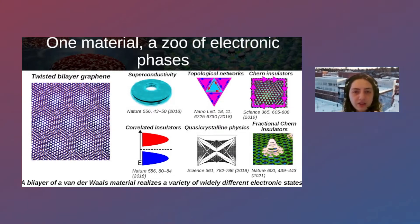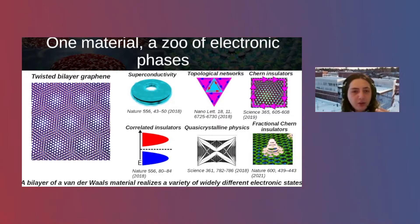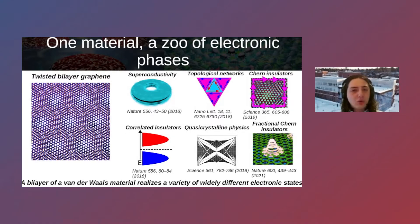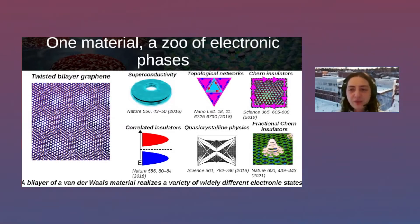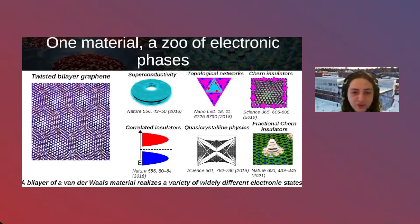As a paradigmatic example of how combining and twisting two-dimensional materials is very powerful, consider twisted bilayer graphene — the simplest twisted van der Waals material — where two layers of graphene are stacked at a certain angle. Just depending on tiny details such as the twist angle or the applied bias, you can realize a huge plethora of electronic orders: superconductivity, topological networks, correlated insulators, charge density waves, and even fractional Chern insulators.